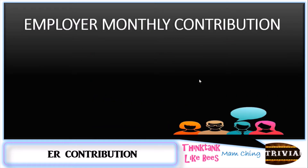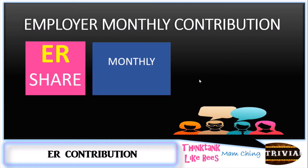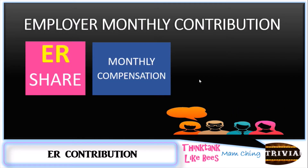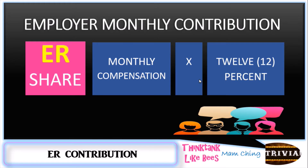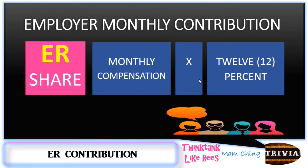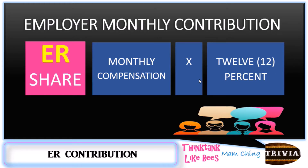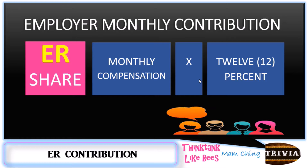For the employer monthly contribution, you need to compute the monthly compensation of the employee multiplied by 12 percent. So this 12 percent is the employer's share toward your benefits.